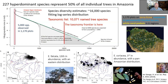Different species achieve hyperdominance in different ways. We can have two examples: Aperua falcata is really concentrated in a relatively small region, while the congeneric Aperua coreacea, which is the most abundant species, achieves that by being distributed all along the Amazon River.